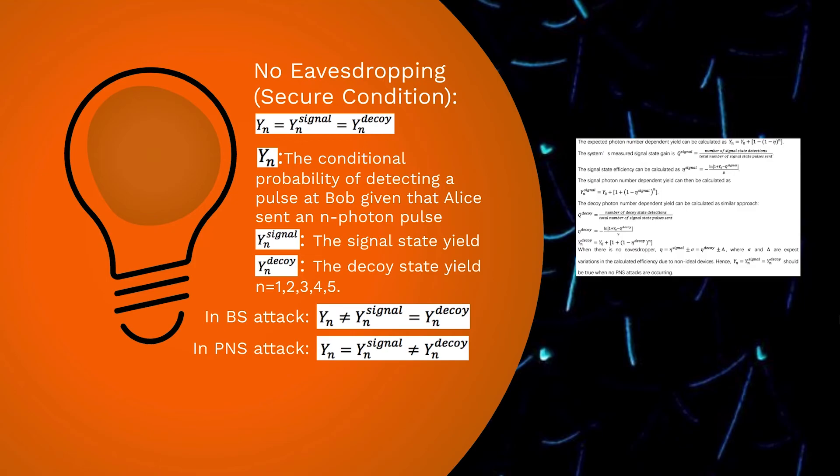Remember that in the photon number splitting attack, Eve blocks the pulses and sends nothing to Bob when there is less than one photon in the pulse. And then she replaces one photon into quantum memory and sends the remaining photons to Bob when there are two or more photons.